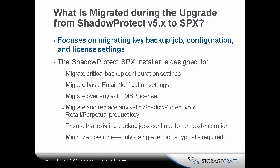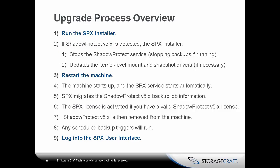The upgrade process migrates critical backup configuration settings, basic email notification settings, any MSP license, and migrates and replaces any valid Shadow Protect 5 retail or perpetual product key. It also ensures that existing backup jobs continue to run post-migration as normal, with only typically one single reboot required to minimize business downtime. The upgrade process is detailed in our FAQ section. Three steps are highlighted in blue and bolded as those are the ones requiring your action — the rest of the process is automated, and Karl will go through this in his demonstration.